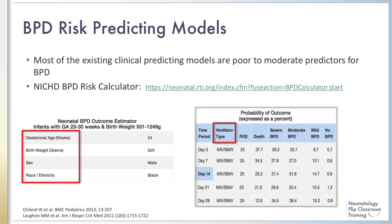Over the years, many models using clinical parameters at an early postnatal age to predict BPD have been developed. In a systematic review and external validation study, Ahnland et al. found that out of 26 clinical prediction models of BPD, only four models utilized external validation and none presented calibration of the predicted value.